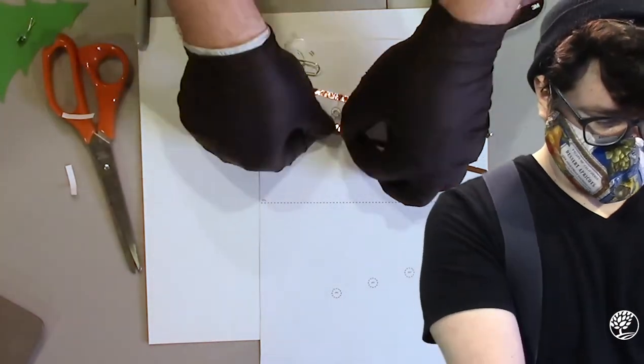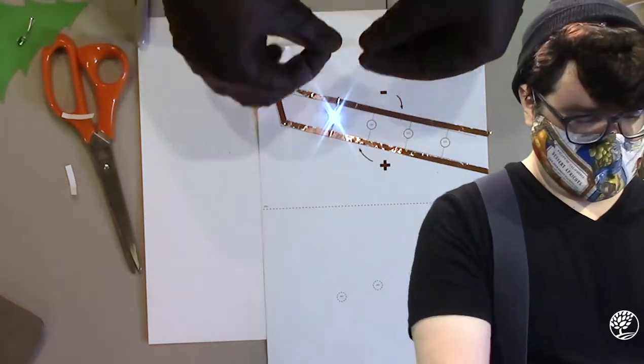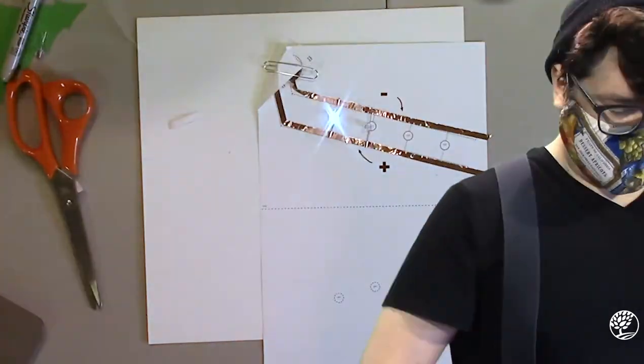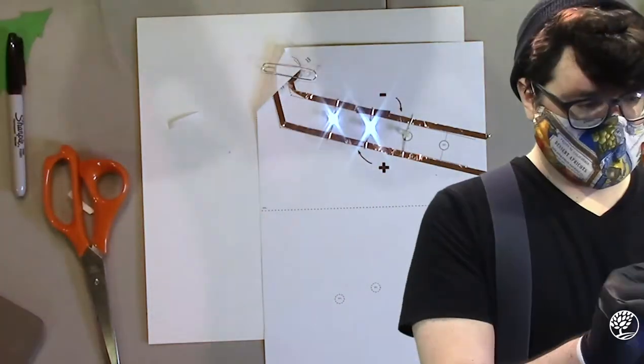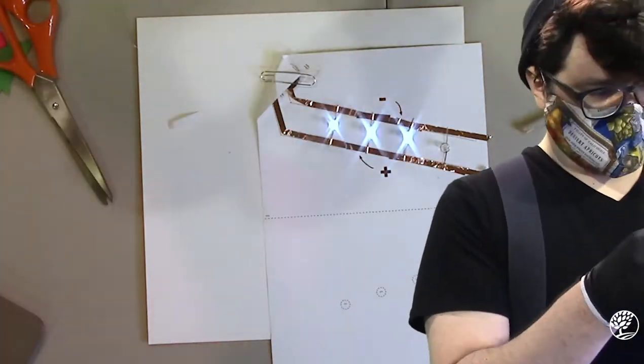Once you have your first LED in place, repeat the process of taping each of your LEDs leads to the appropriate trace, either positive for the longer leg or negative for the shorter leg, making sure that they each light up as you secure them.